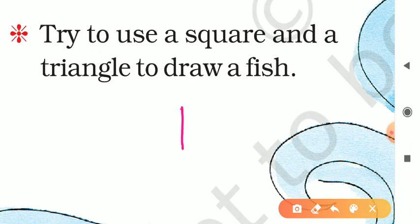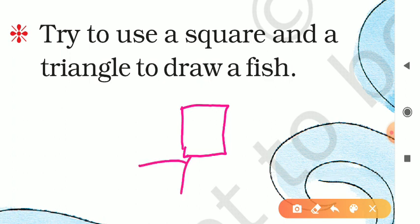First we will make a square. As you all know, a square has all four sides equal. The square is made. Now it's time to make a triangle — we will make a triangle on the downside. Now it is looking like a fish! Let's draw its eye. Finally, I have made my fish!